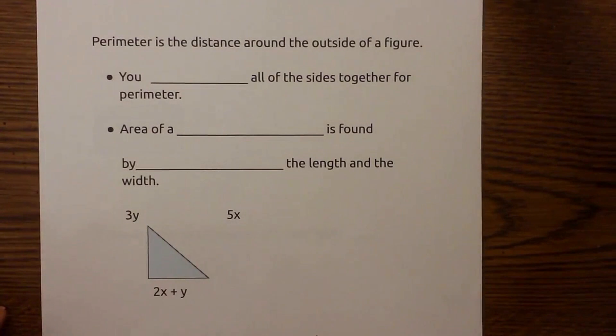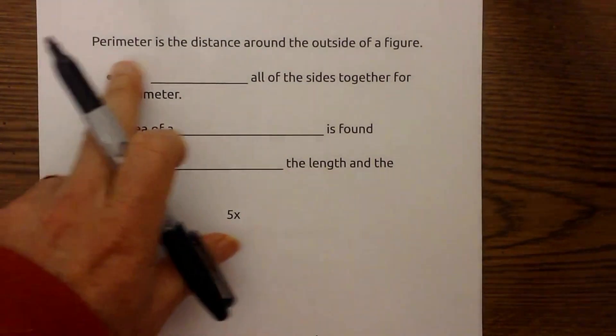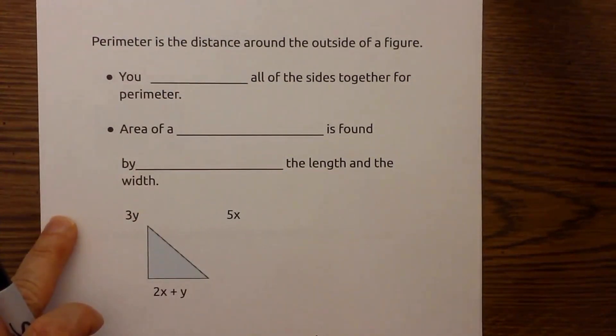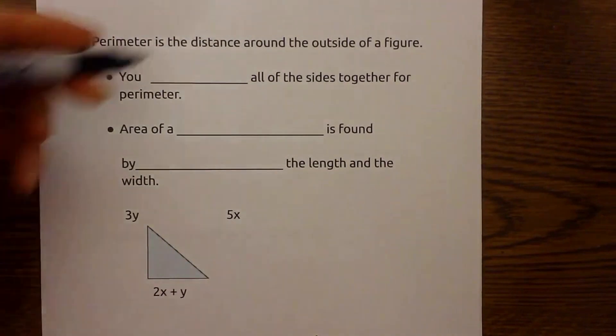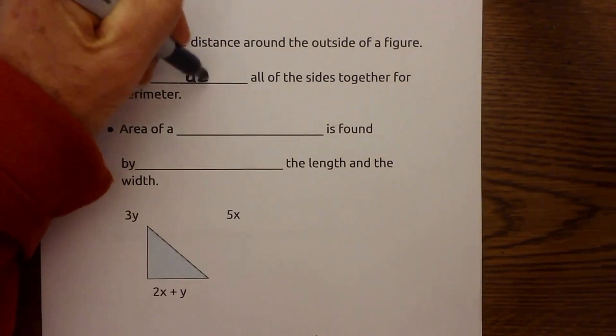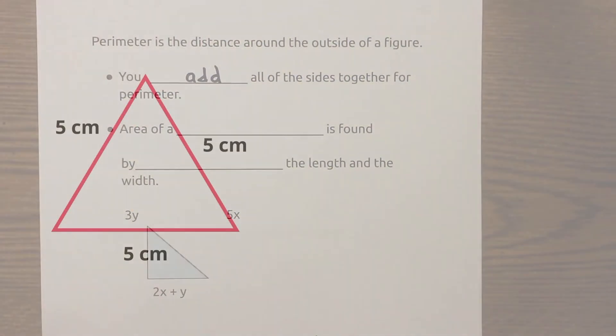The perimeter is the distance around the outside of the figure. You add all of the sides together.